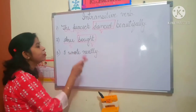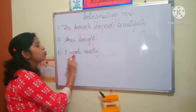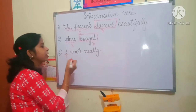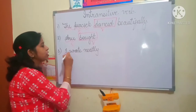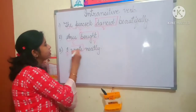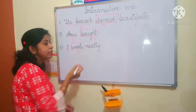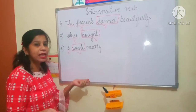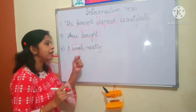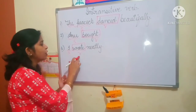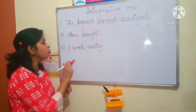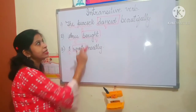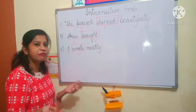Third example: I wrote neatly. Who is doing the action? I — so I is the subject. What was the action performed? Wrote — wrote is the verb. But is there any object? Neatly — is neatly any place or object? No, it is an adverb. So it is not having any object. Verb having subject but no object is the example of intransitive verb.